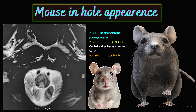Next case shows the normal foramen magnum with the brainstem, tonsils, part of the cerebellum, and vertebral arteries. This typically mimics a mouse face — the 'Mouse in Hole' or 'Mouse in Foramen Magnum' appearance. The medulla forms the head of the mouse, the vertebral arteries form the eyes, and the tonsils with part of the cerebellum form the body. This is classically seen at the level of the foramen magnum in a normal brain, commonly in young or pediatric age groups. Thanks to Dr. Jazz for contributing this image.